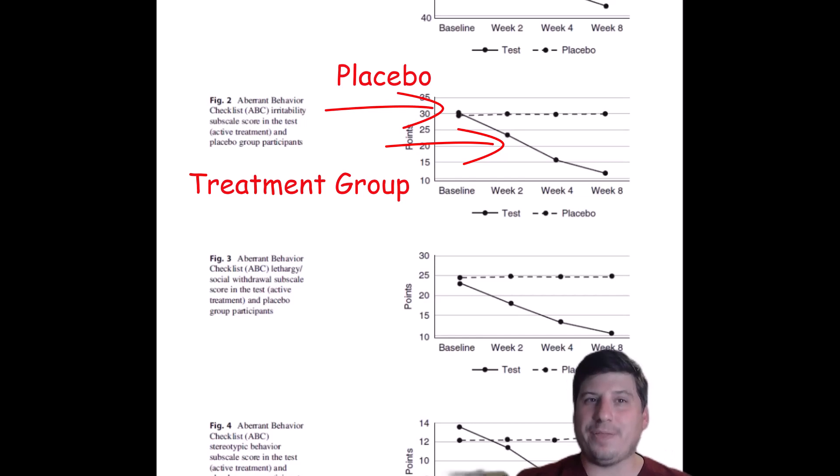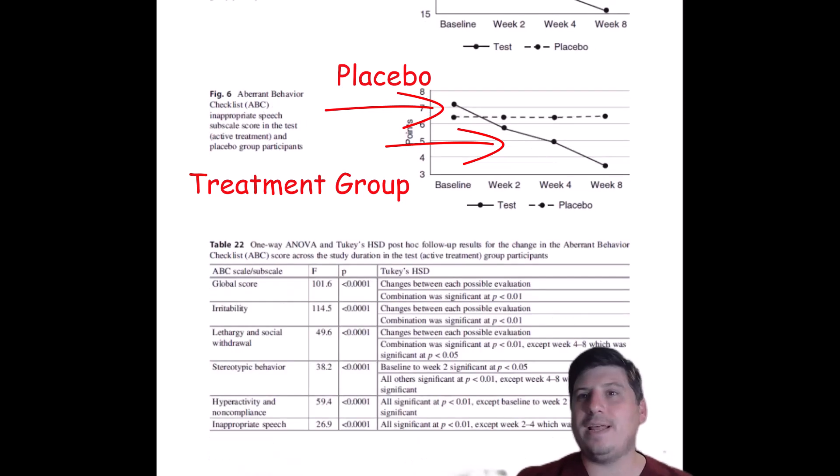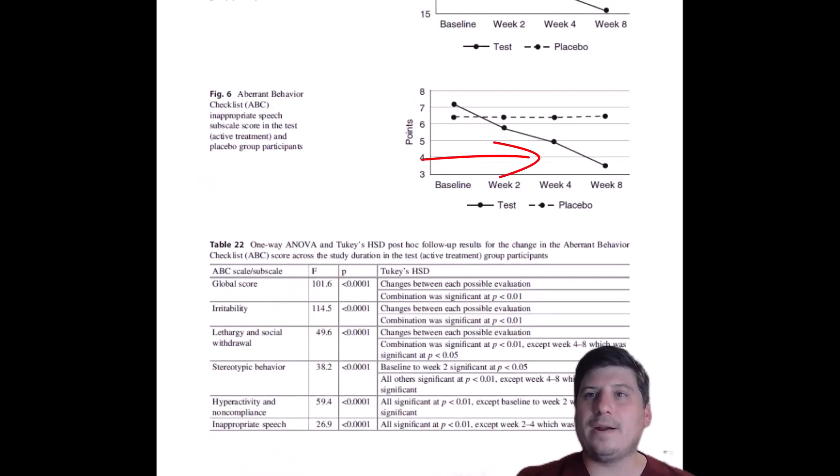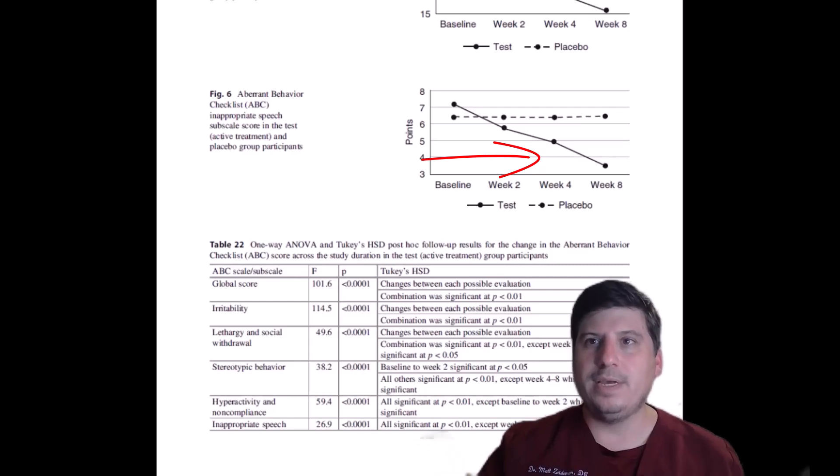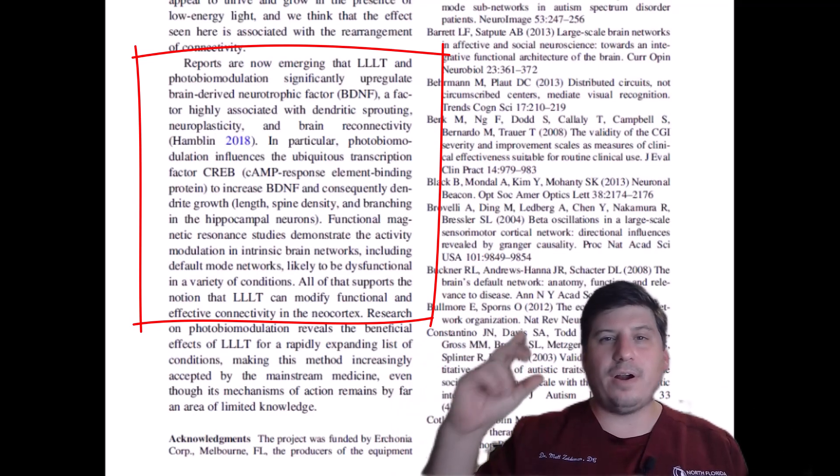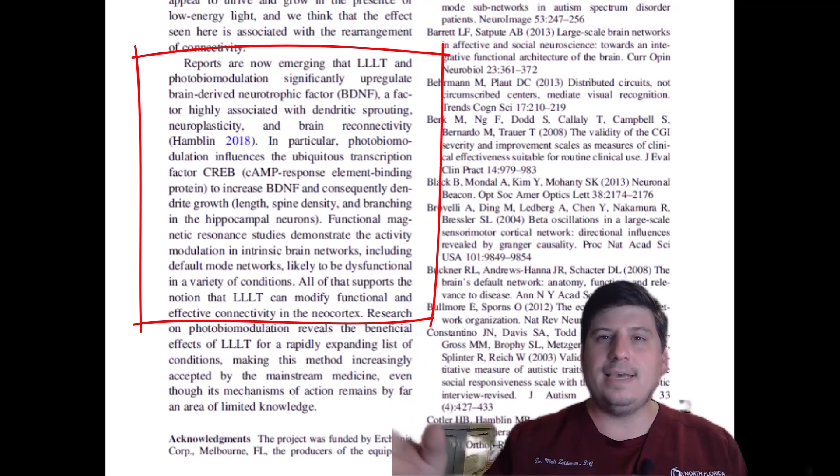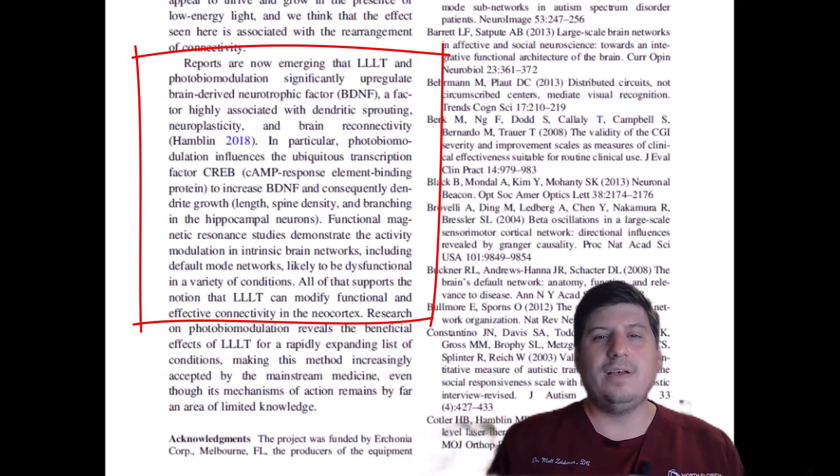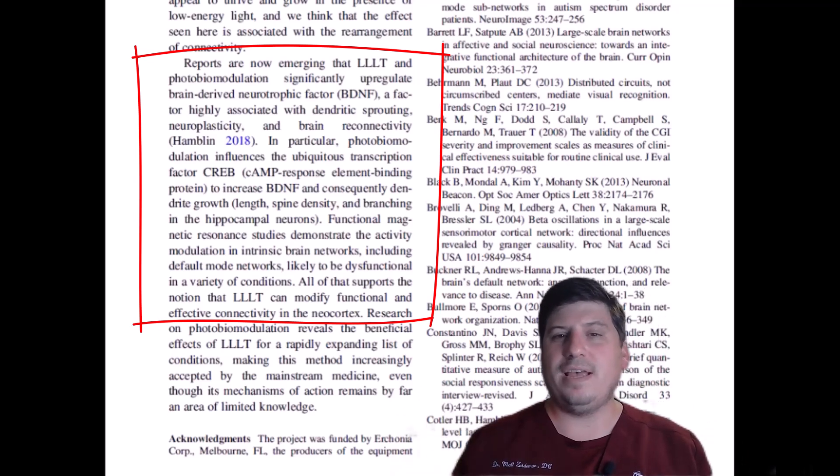And what's even more impressive about this study is they stopped treatment and measured that aberrant behavior checklist again after another four weeks with no therapy in between and saw even more increase in improvement over the treatment group. This is because this treatment actually creates neuroplasticity in the brain. It stimulates the neurons to fire and connect and actually changes how the brain functions and wires. Even more importantly, there were no side effects reported in this study whatsoever, making it a very safe intervention as well.